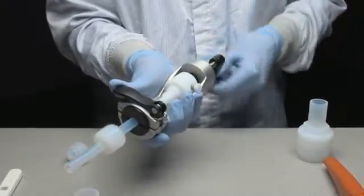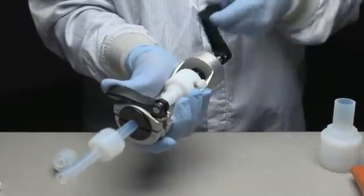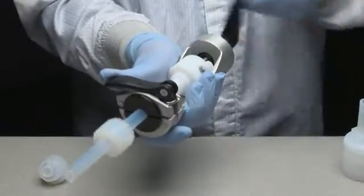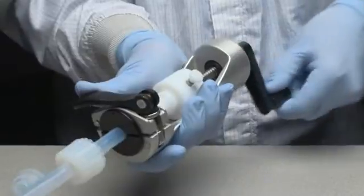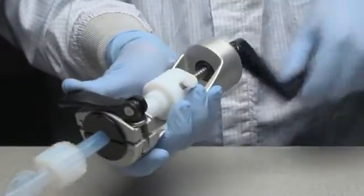Simply rotate the handle clockwise to push the insert into the tube until it contacts the mandrel's shoulder. Now rotate the handle counter-clockwise until the mandrel is free from the tube assembly.